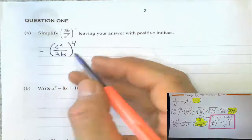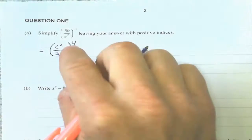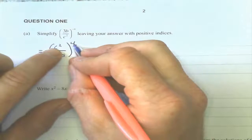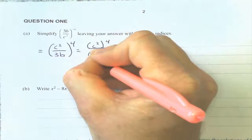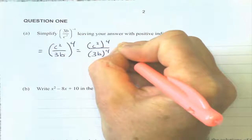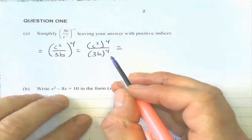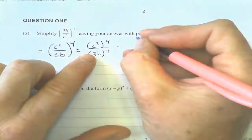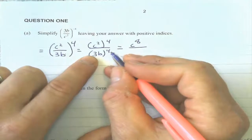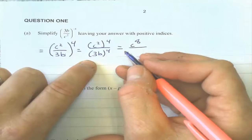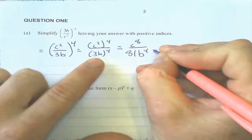Now when I have a fraction to a power, it's going to equal each of these raised to the power of 4. So it's going to equal c squared to the power of 4, over 3b to the power of 4. Power to a power gets multiplied, so that's c to the 8th. And 3 to the 4th is 3 times 3 times 3 times 3, which is 81. And b to the power of 4 is just b to the power of 4.